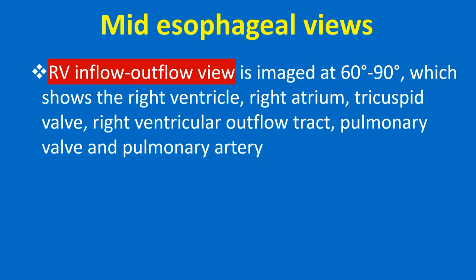The RV inflow outflow view is imaged at 60-90 degrees, which shows the right ventricle, right atrium, tricuspid valve, right ventricular outflow tract, pulmonary valve, and pulmonary artery.